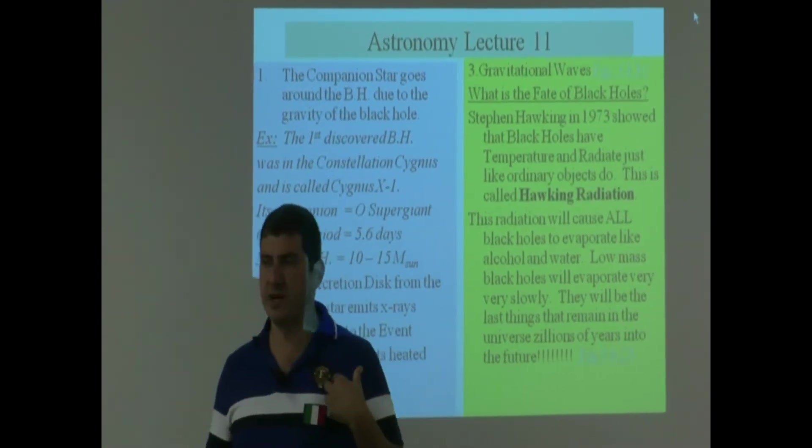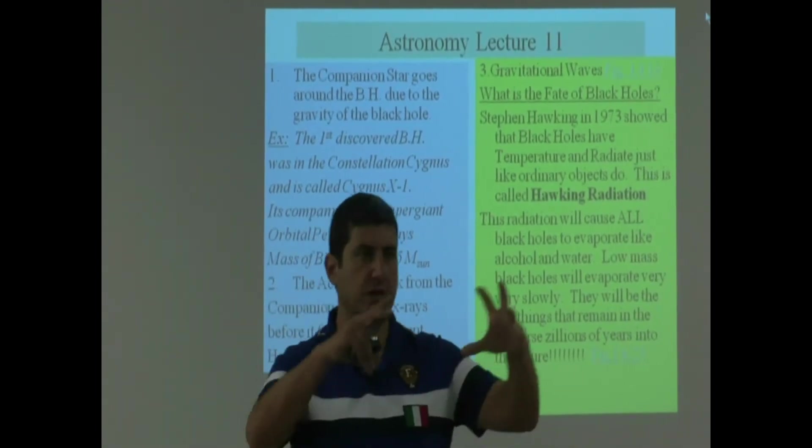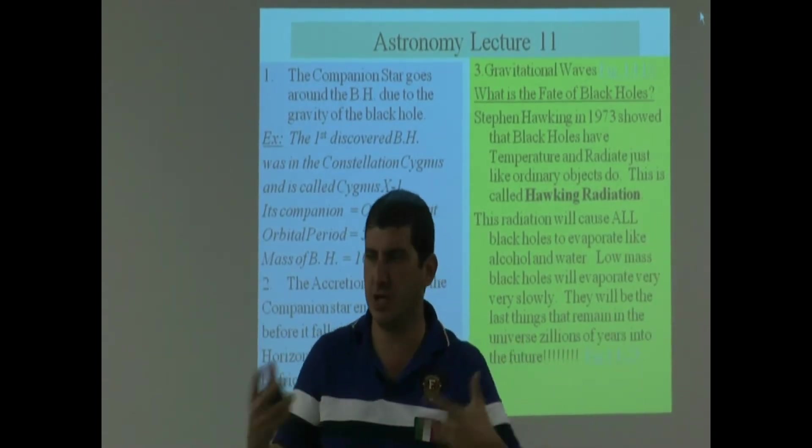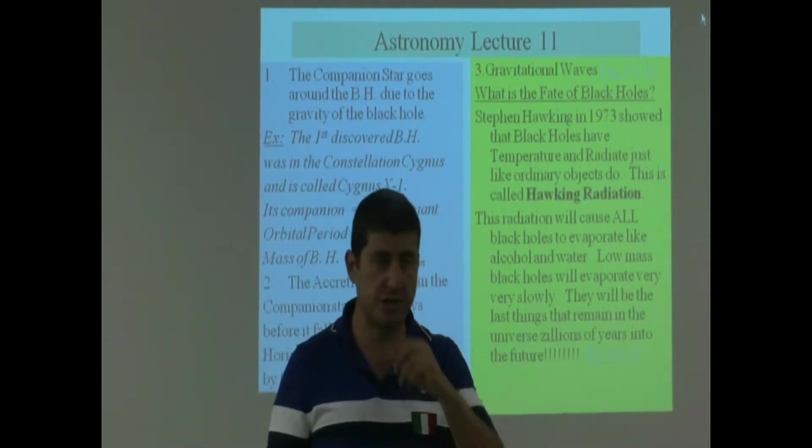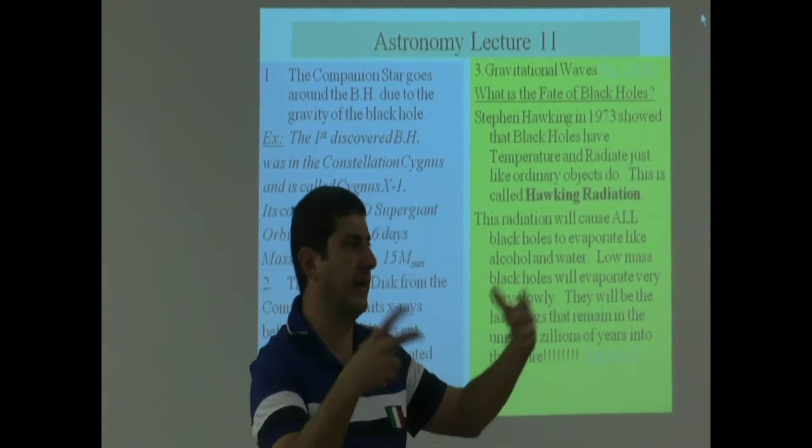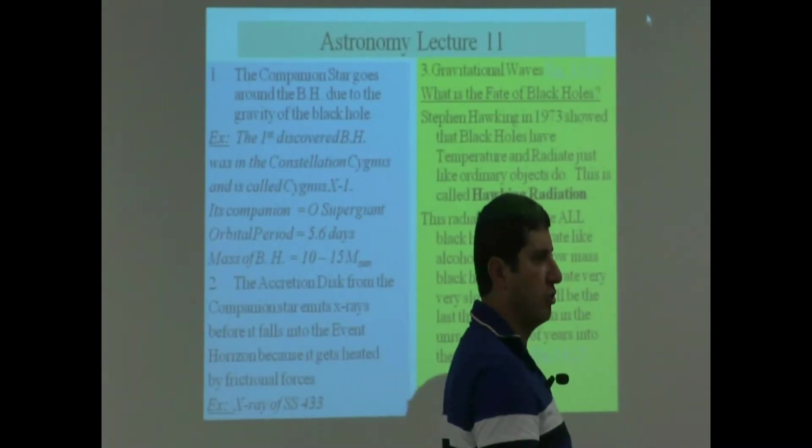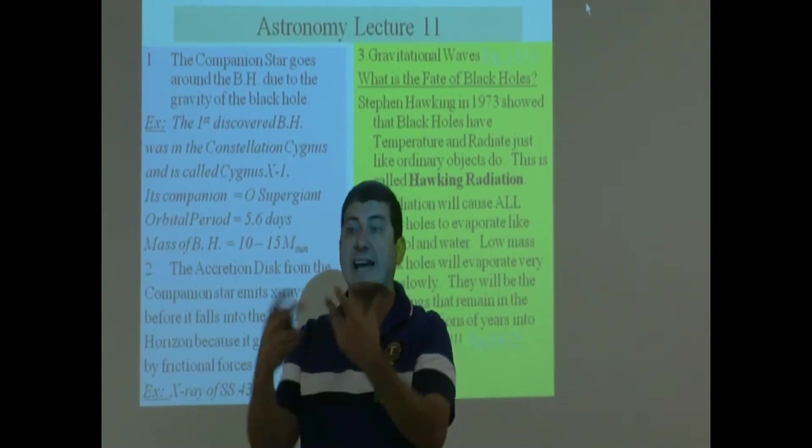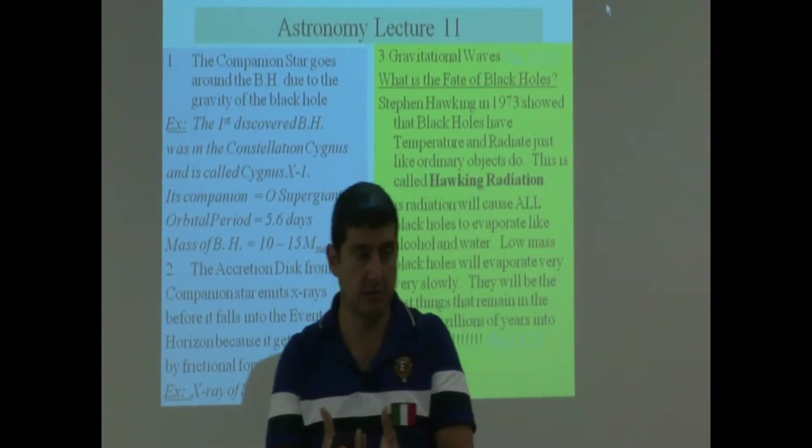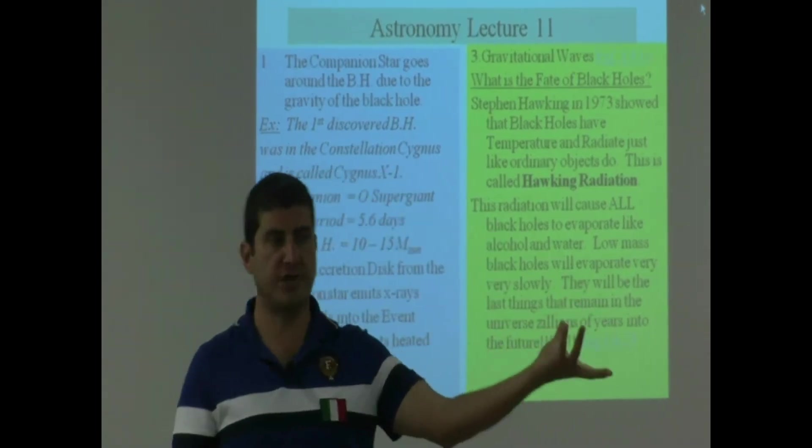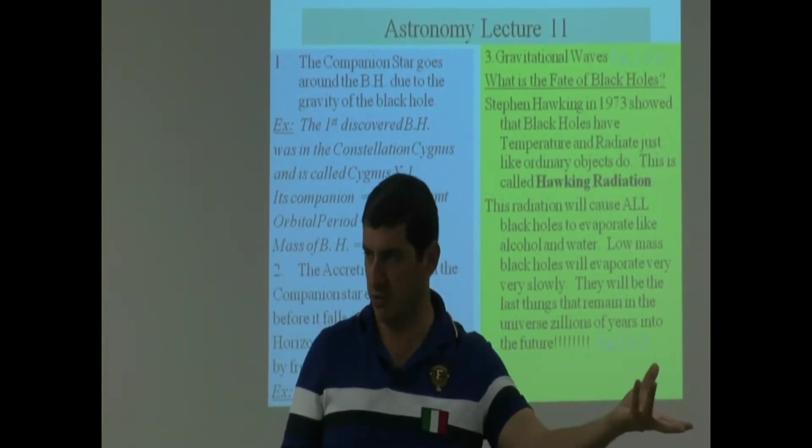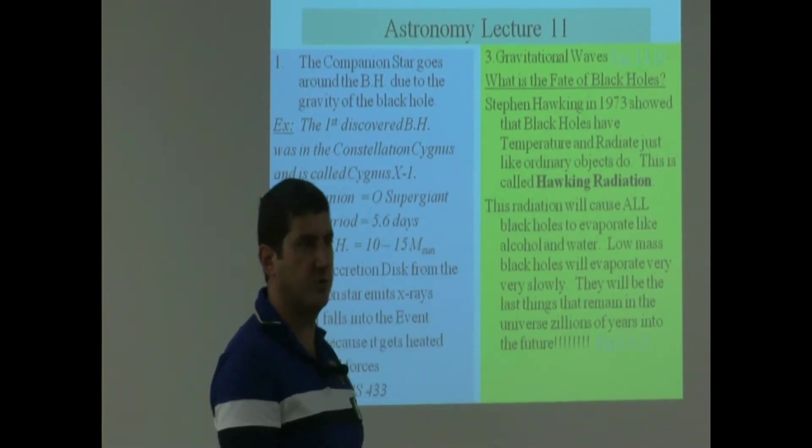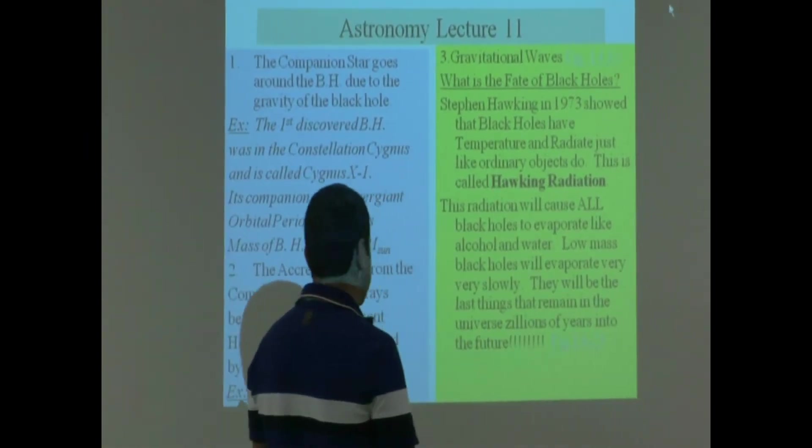So basically, the ending of our universe will be when the galaxies are much, much farther away from each other. They don't have any more energy to generate new stars. And then stars end up as basically white dwarfs, black holes, neutron stars. And then the black holes will basically be the last things to evaporate away. And then a new universe will begin at that point. A new universe hopefully will begin. And then that universe will give birth to other people, civilizations.